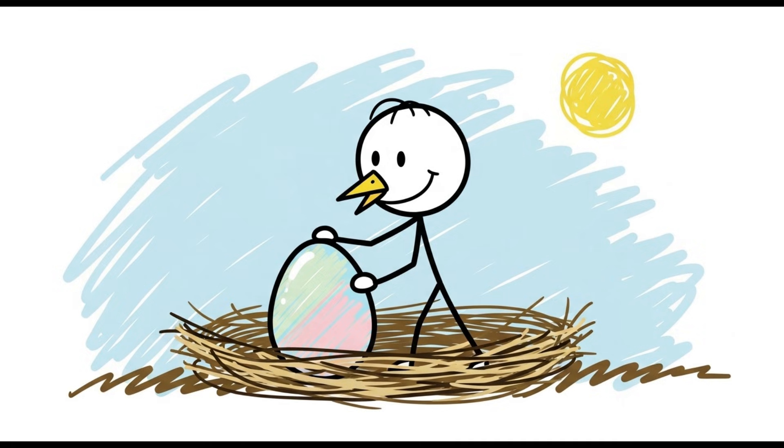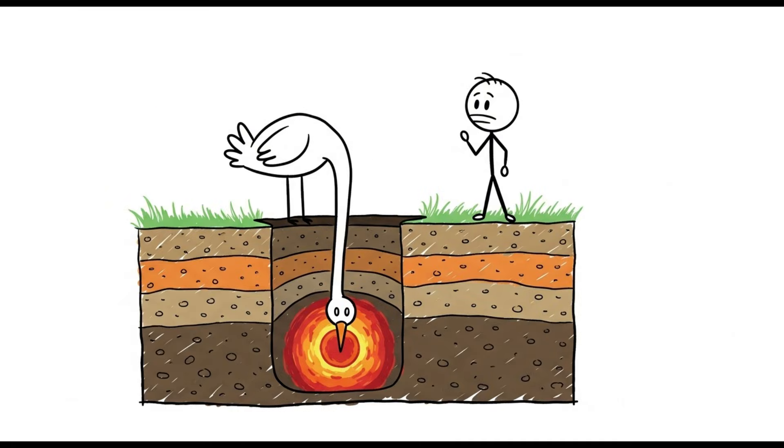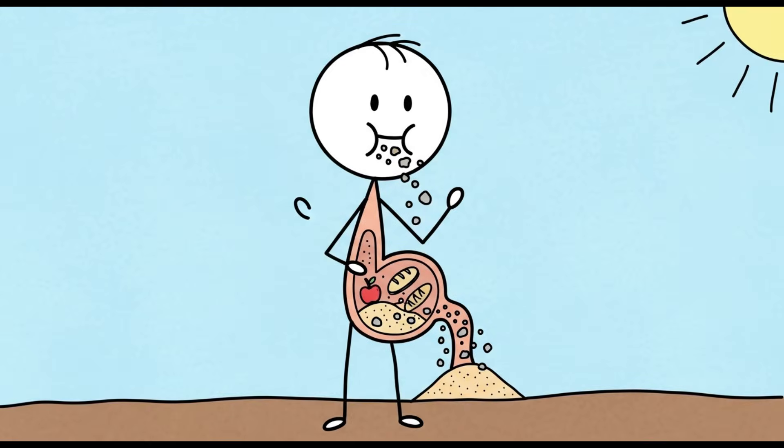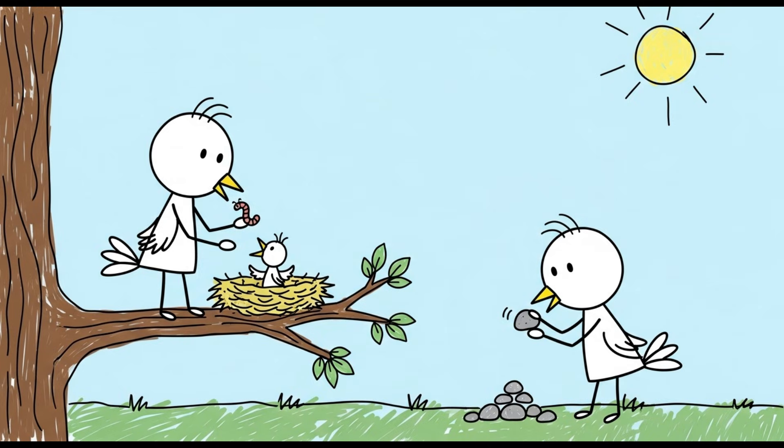It's a simple misunderstanding of perfectly normal bird behavior. Ostriches dig shallow holes in the ground for their nests. They use their beaks to turn their eggs several times a day to ensure they're evenly heated. From a distance, this giant bird lowering its long neck and head into a hole looks exactly like it's trying to become one with the Earth's core.